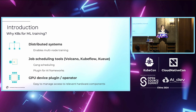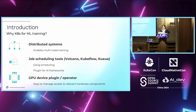Why Kubernetes for ML training? Kubernetes is designed for distributed systems, which is really helpful when running multi-node training workloads. It also has a good ecosystem of job scheduling tools like Volcano, Kubeflow, and Kueue, which support gang scheduling — helpful for multi-node training so pods get scheduled at the same time. They also have plugins for AI frameworks that handle configuration behind the scenes. Lastly, the GPU device plugin operator makes it easy to manage the software layer that gives you access to the hardware components required for AI training.